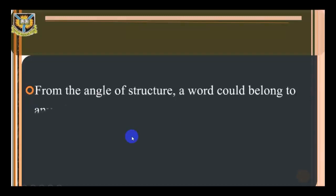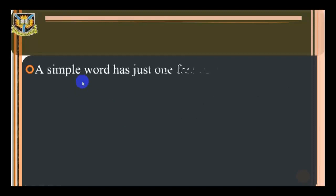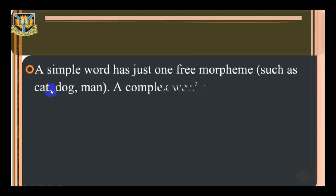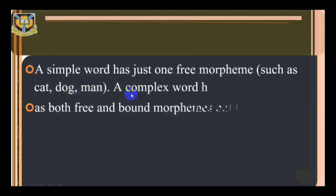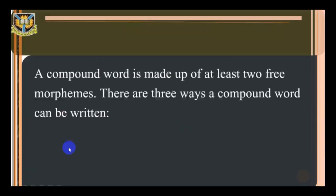From the angle of structure, a word could belong to any of these types: simple, complex, or compound. A simple word has just one free morpheme, such as caught, dog, man. A complex word has both free and bound morphemes, but the morphemes cannot be separated, such as went, men, sought. A compound word is made up of at least two free morphemes.